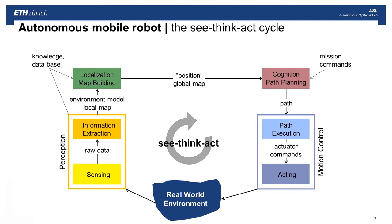The see-think-act cycle is the main element the robot has to operate through — somewhat a control cycle where the robot has to perceive its environment, localize itself within this environment, then apply a cognition part which is mainly path planning to find its best way for a given mission, and finally move in its environment to generate the actions of the wheels to get from A to B. We will always come back to this see, think, act cycle.